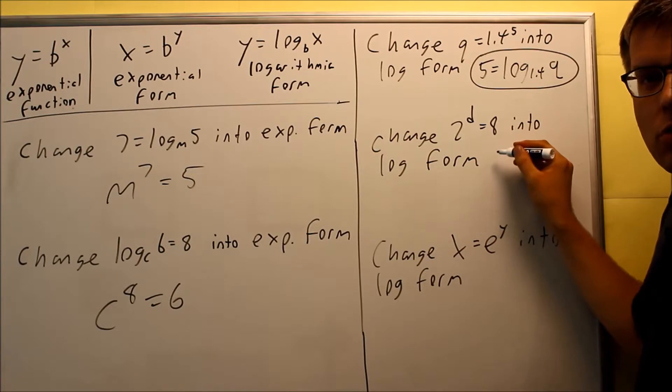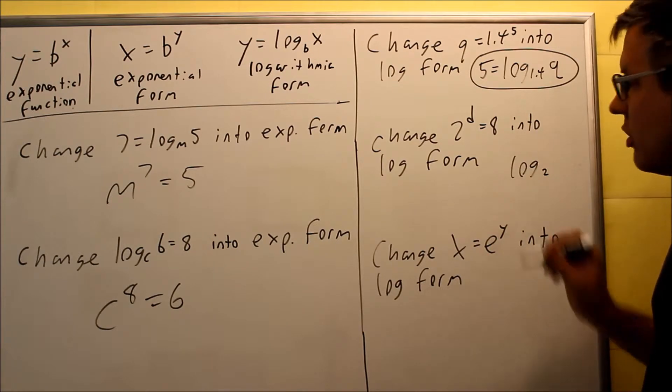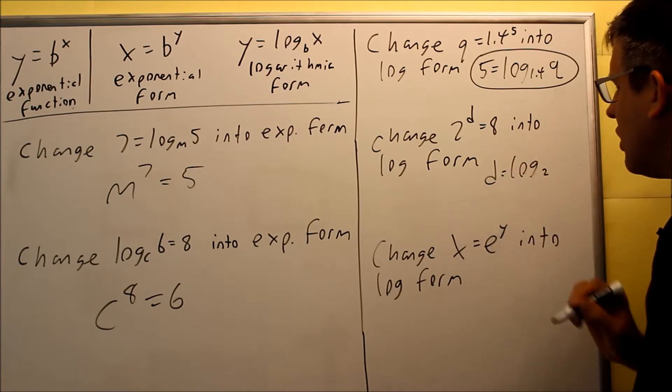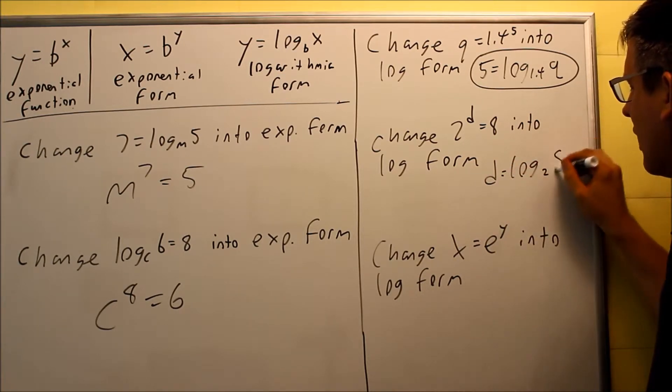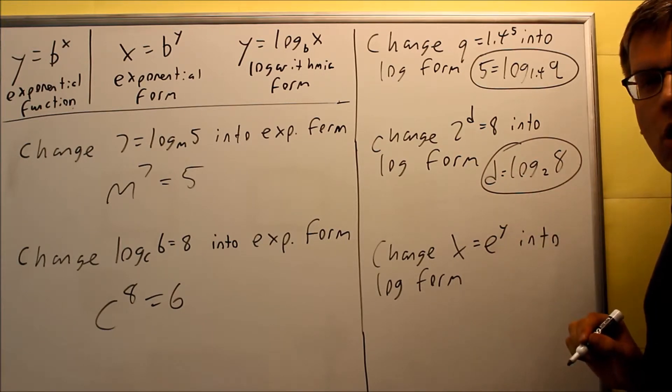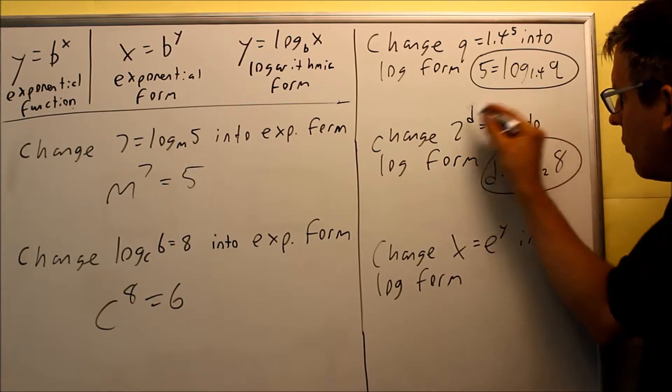I want to do the same exact thing with this one. To do this one, again, I'm going to start by putting a log of 2, because 2 is the original base of that one. After the equal sign, I'm going to put a d. So I have d equals log 2, and then I have an 8 that goes afterwards. So this right here, d equals log base 2 of 8. That would be the equivalent log form for this one.